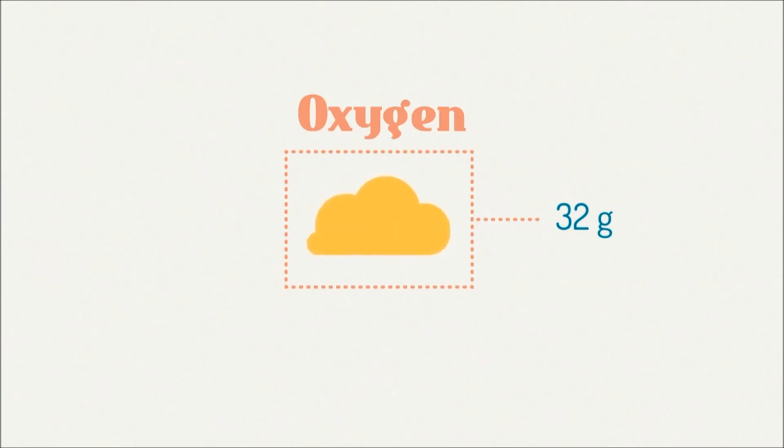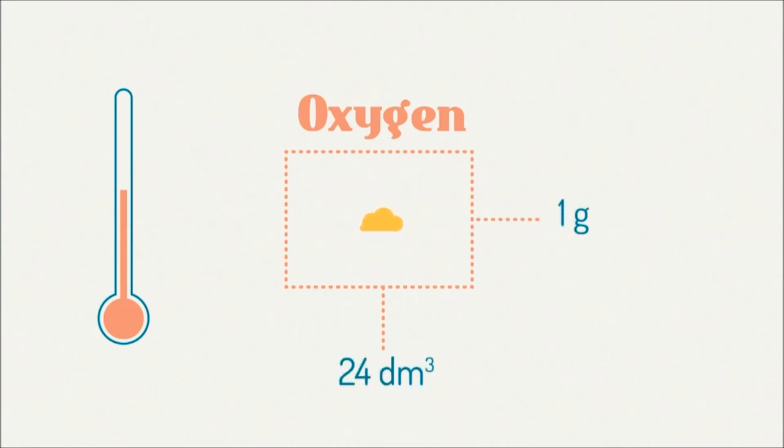So, 32 grams of oxygen gas at room temperature occupies 24 decimetres cubed. Therefore, 1 gram of oxygen gas at room temperature occupies a volume of 24 divided by 32 decimetres cubed. And so, 4 grams of oxygen gas at room temperature occupies a volume of 4 times 24 over 32 decimetres cubed, or 3 decimetres cubed.